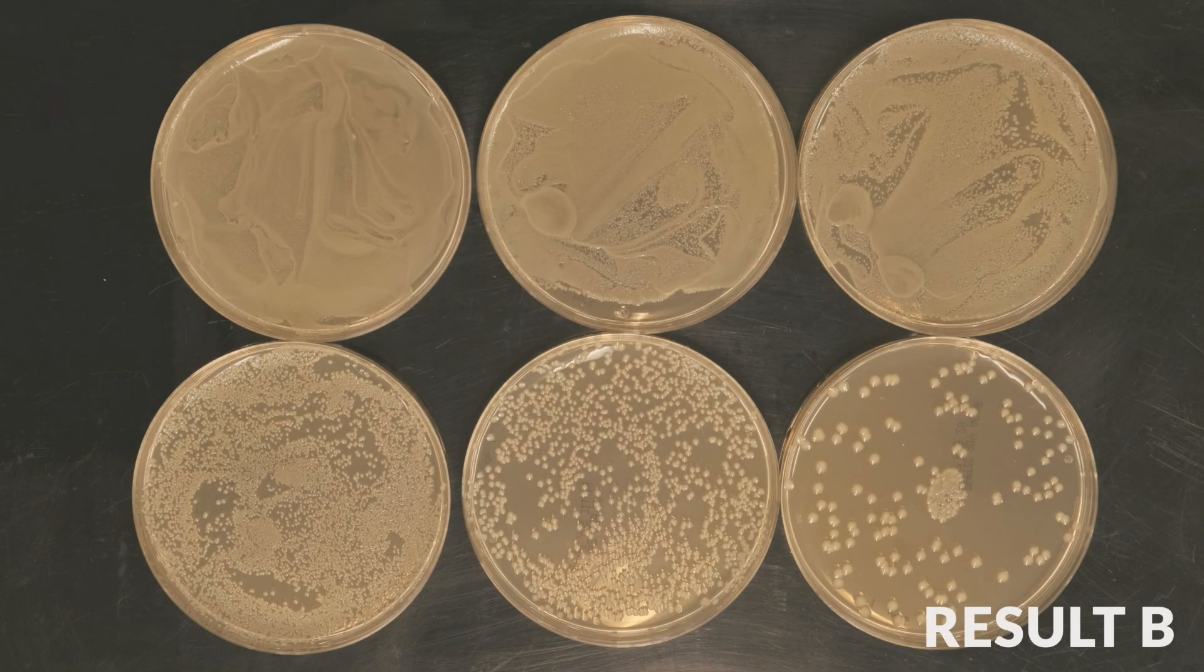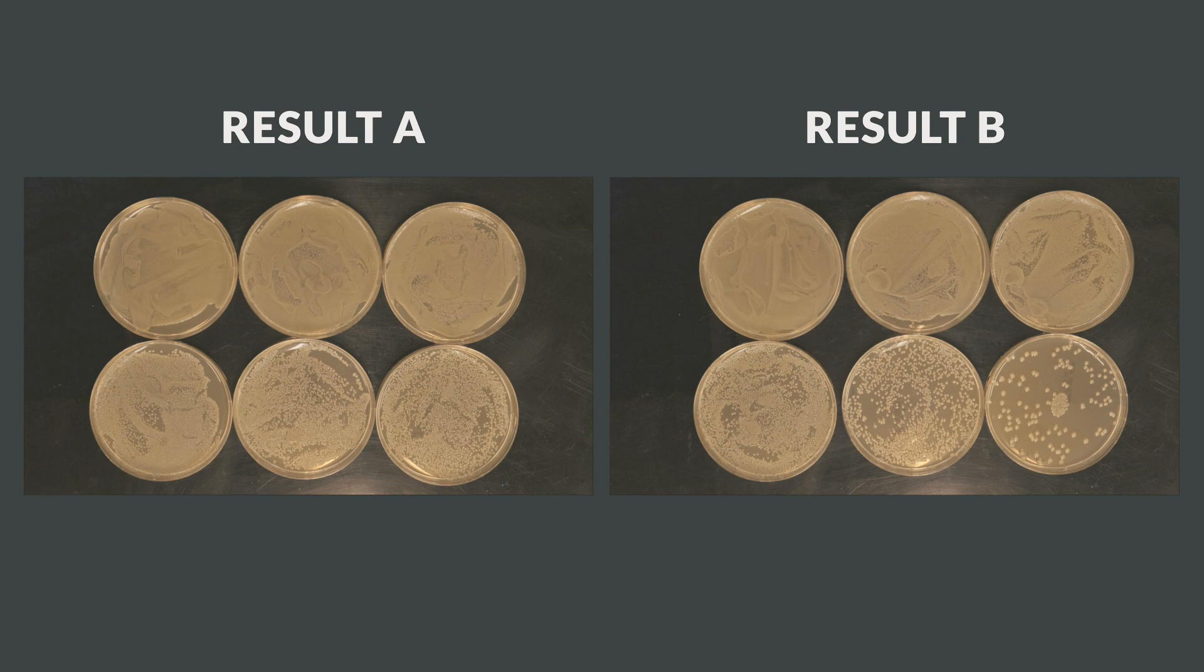Take note of the differences in bacterial colony numbers as the serial dilutions progress from 10 to the negative 1 all the way through to 10 to the negative 6.